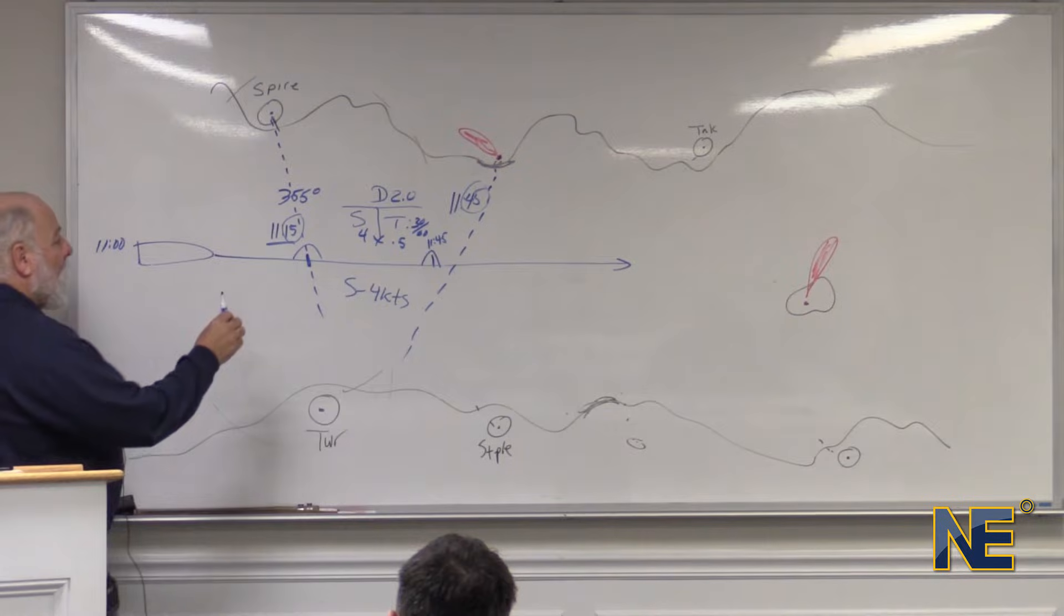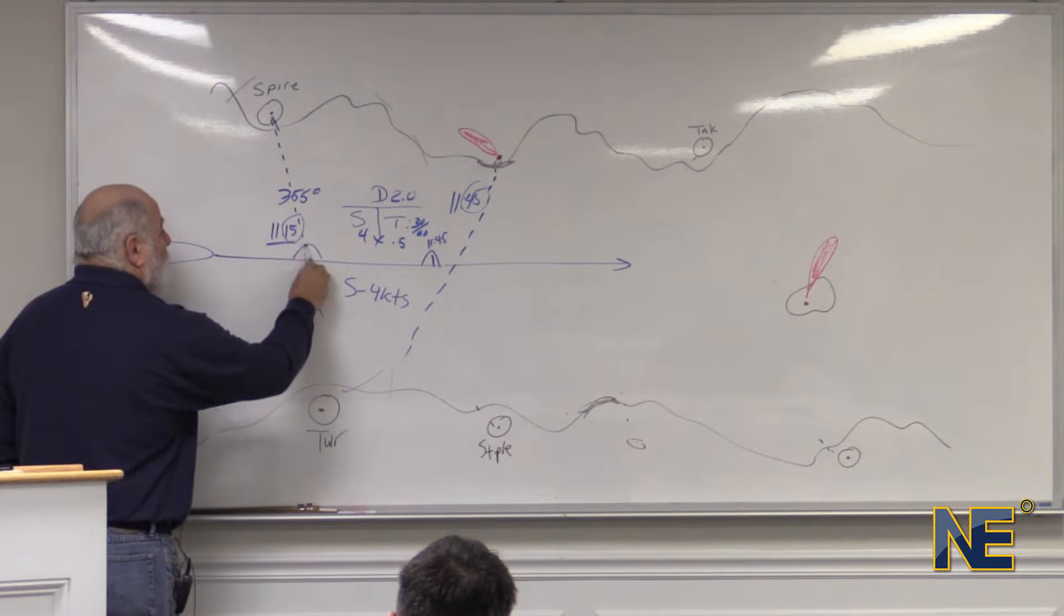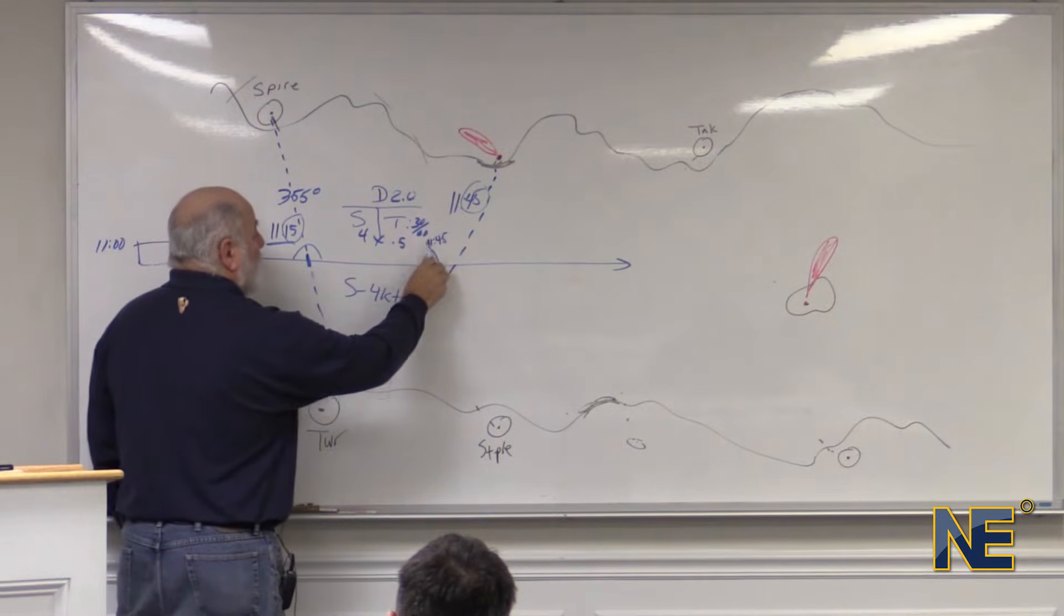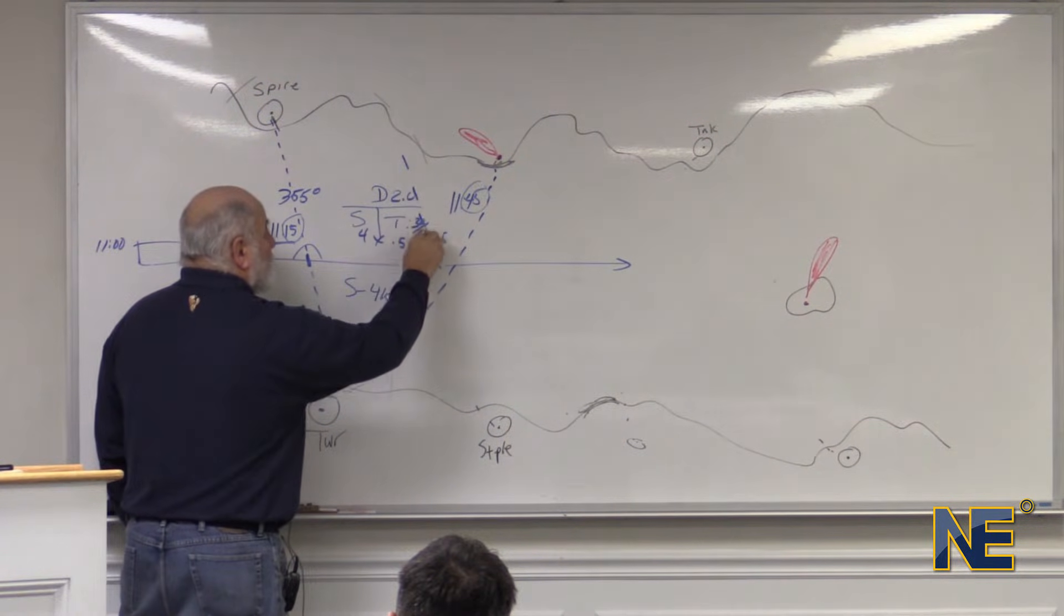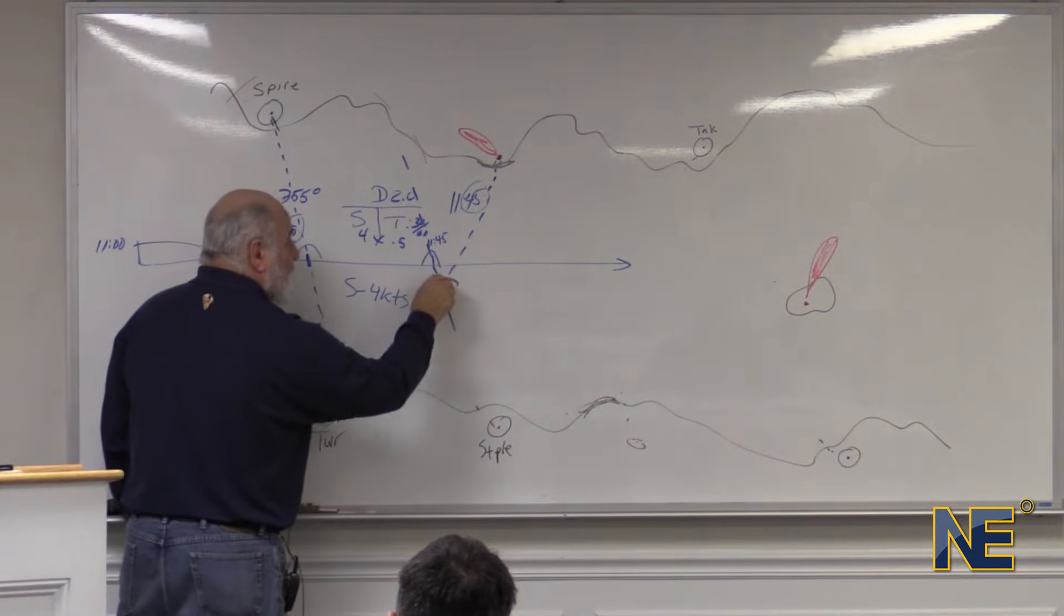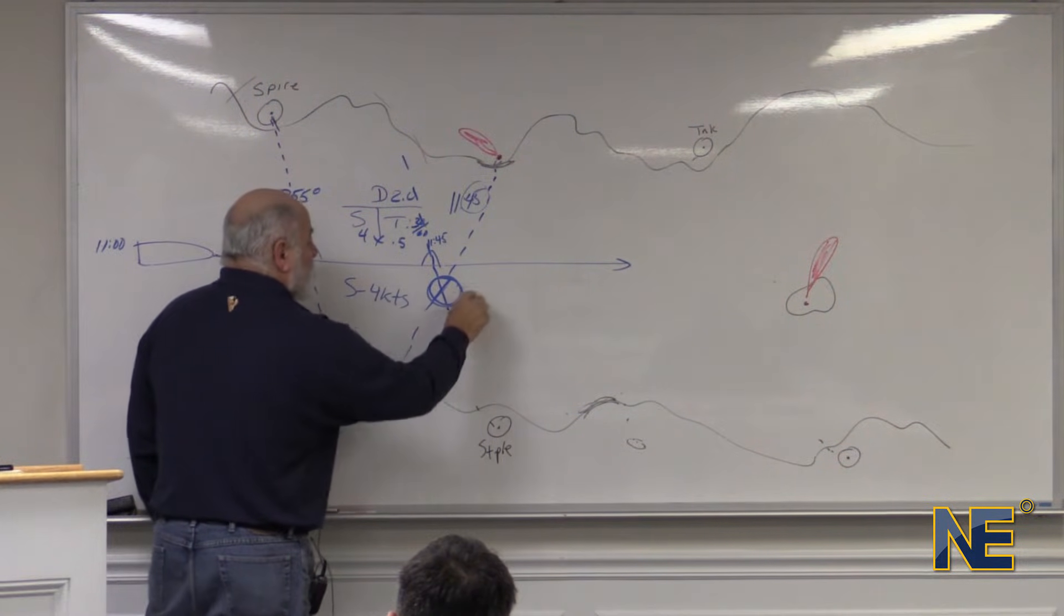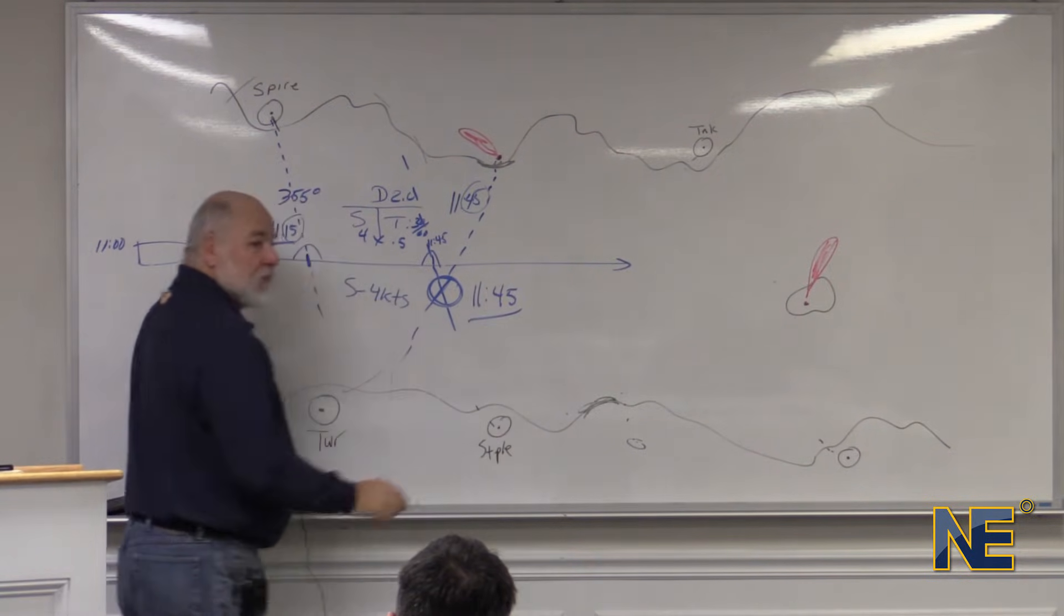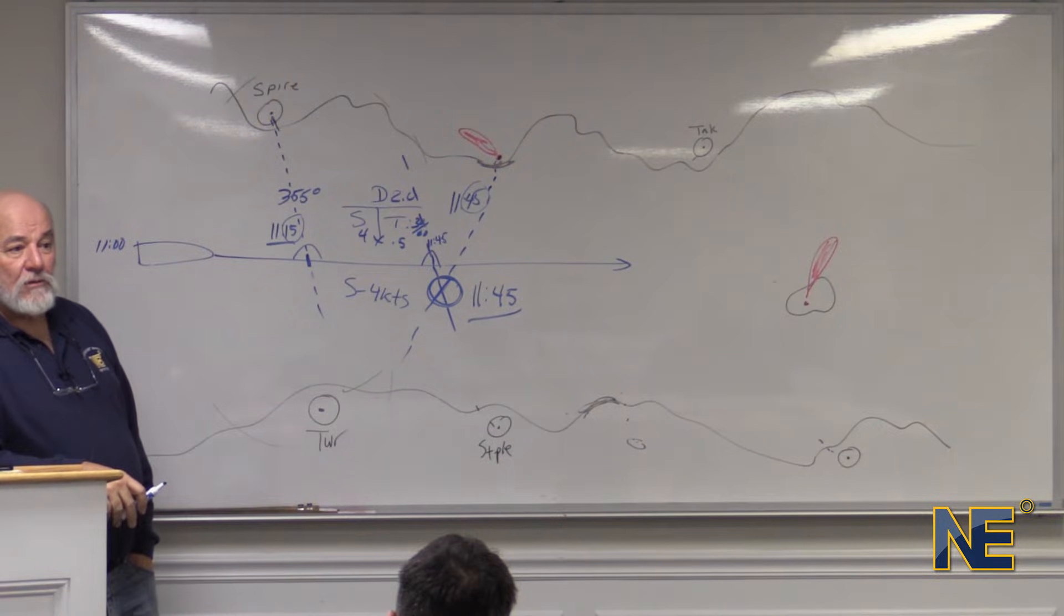All we do now is we take this original line of position and we advance it to our new DR parallel. And where it crosses our second line of position, that's our 1145 fix. Running fix. That's how that works.